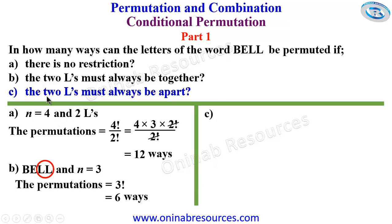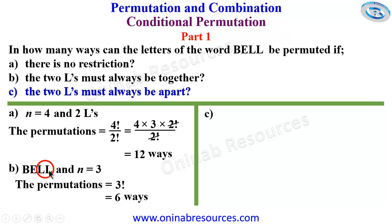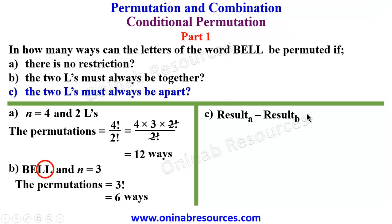For part (c), the two L's must always be apart. In this type of problem, we use the fact that the number of ways of arranging the letters of the word BELL without any restriction is 12, and out of these 12, there are 6 arrangements where the two L's are together. If the two L's are not together, they are apart, so the number of ways where the two L's are always apart is 12 minus 6, which gives 6 ways.